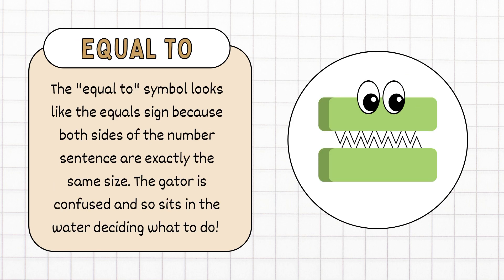Equal to: the equal to symbol looks like the equal sign because both sides of the number sentences are the same size. The gator is confused and so sits in the water deciding what to do.